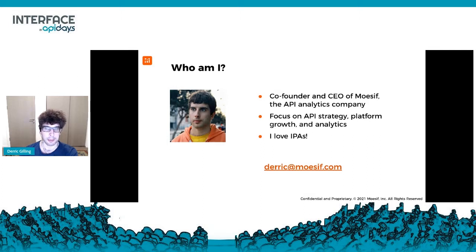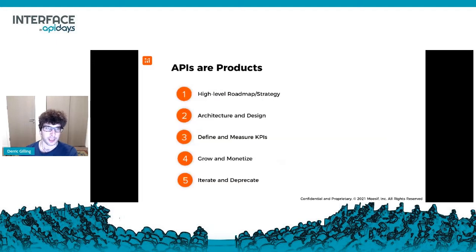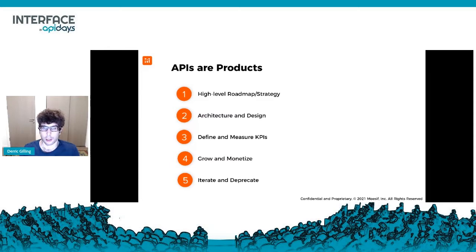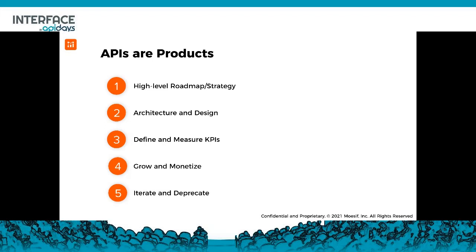A little bit about me — I'm the CEO of Mosef, an API analytics company, and I love discussing API strategy, product strategy, and analytics. Little known fact: I love IPAs, so I'm sure I'll be grabbing one later today. APIs are becoming products, but that means you need to think about them as products in themselves — think about your roadmap, your strategy, your architectural design, and the rest of the process before you get to iterating and deprecating an endpoint.